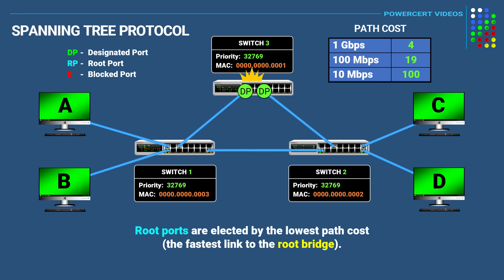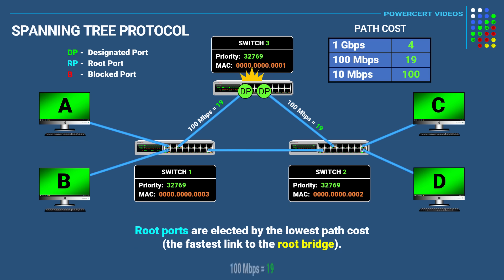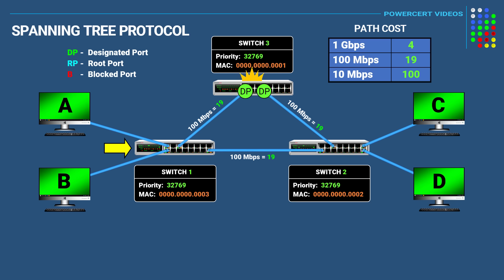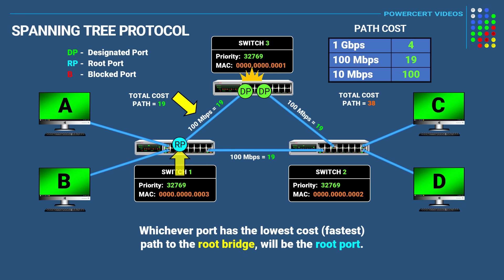The path cost is calculated as follows: if the link speed is 1 gigabit per second, the cost is 4; if the link speed is 100 megabits per second, the cost is 19; and if the link speed is 10 megabits per second, the cost is 100. If all links between the switches are 100 megabits per second, all three links will have a path cost of 19. Starting with switch 1, it has two paths to the root bridge — one with a cost of 19, and a longer path with a cost of 19 plus 19, equaling 38. Since the first path has a lower cost, that port will be the root port. The same logic applies to switch 2.